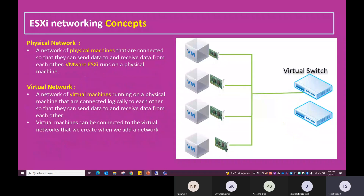A physical network is a network of physical machines connected to send and receive data. VMware ESXi runs on a physical machine, so it still needs physical switches. A virtual network is a network of virtual machines running on a physical machine, connected logically to each other. Virtual machines can be connected to the virtual network we create when we add a network adapter.